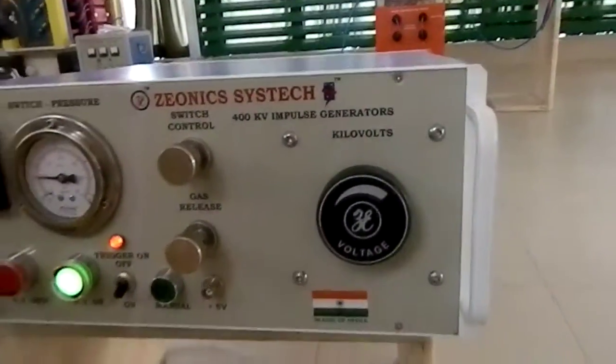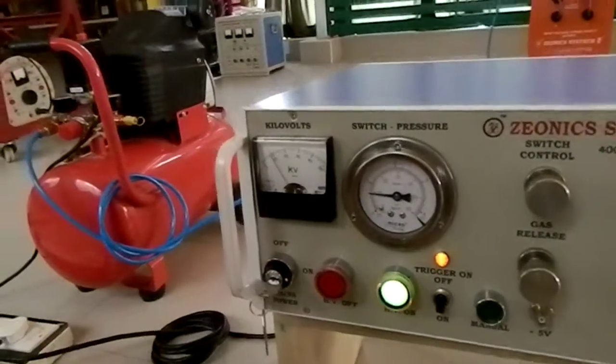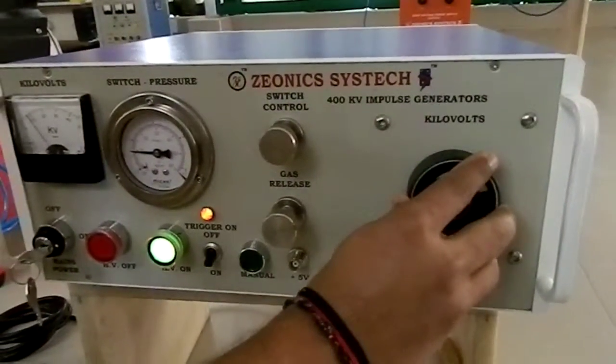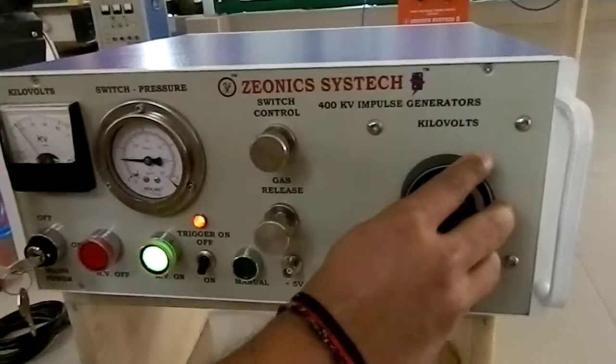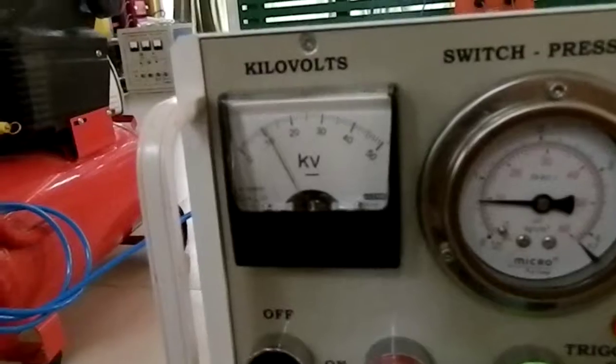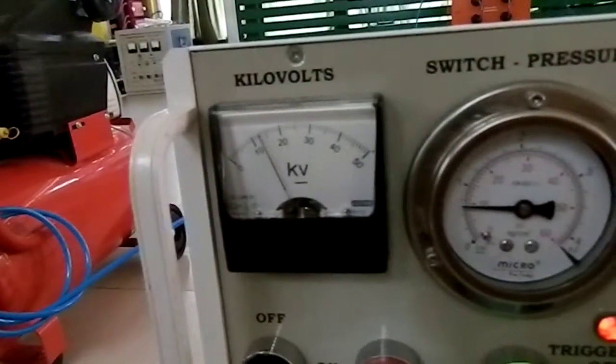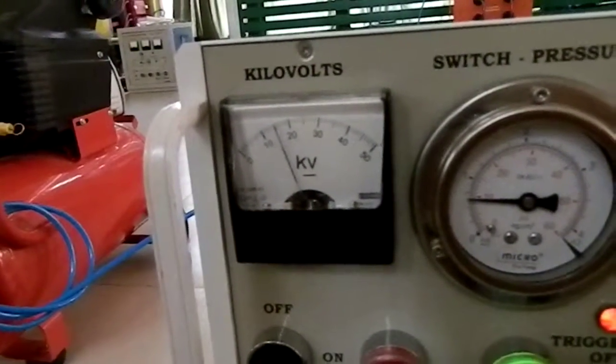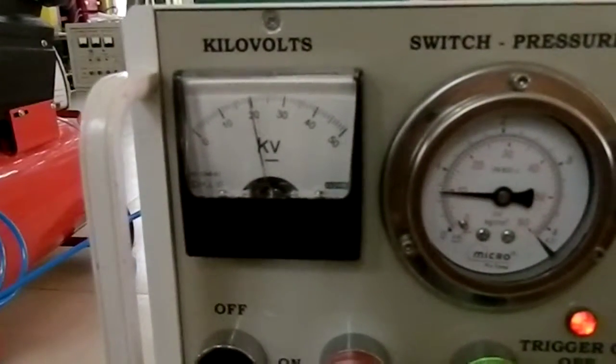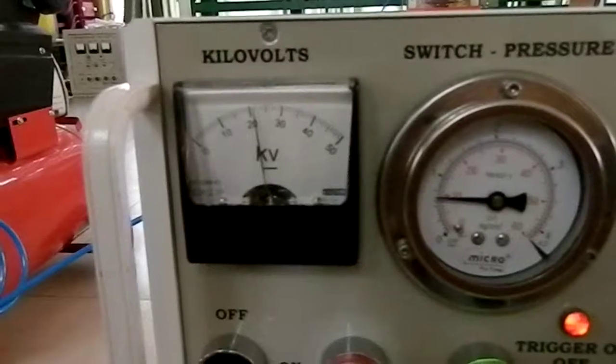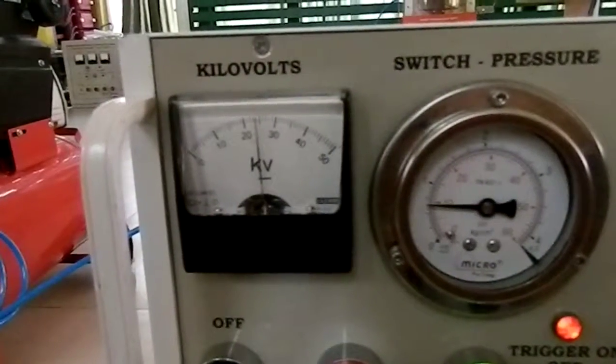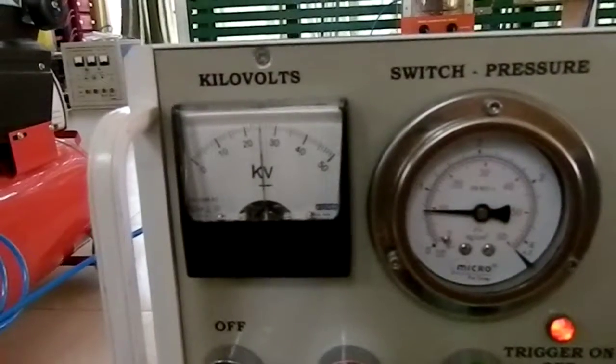Now we will go up in the voltage and fire at a higher voltage. Just turn the variac. As we are going up you are seeing the voltage being built up. Now it has already passed 15 kV, 20 kV, 25 kV.